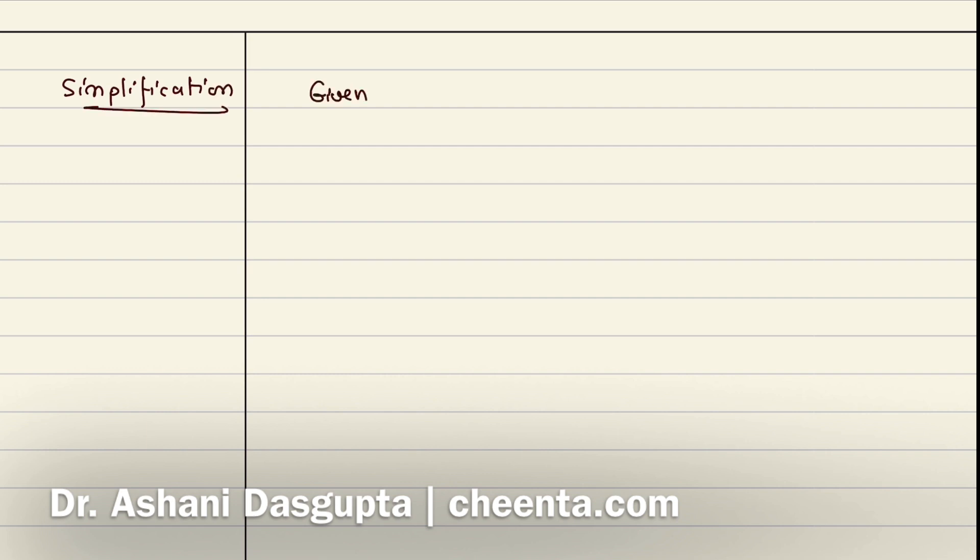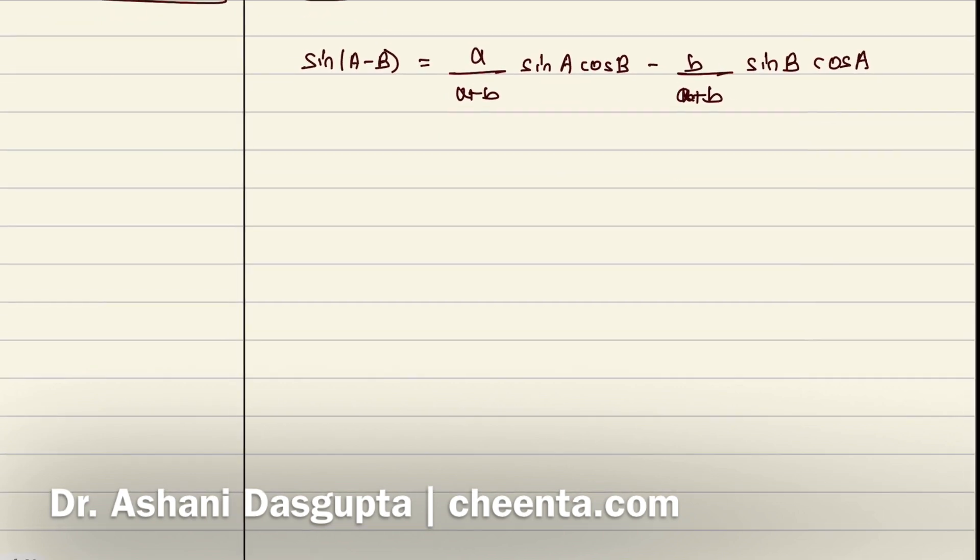Our given data is that sin(A-B) = a/(a+b) × sinA cosB - b/(a+b) × sinB cosA. Let's simplify a little bit. sinA cosB - cosA sinB, I just expanded this using the trigonometric formula, equals a/(a+b) × sinA cosB - b/(a+b) × sinB cosA. So this is true because I used the trig formula for sin(A-B).